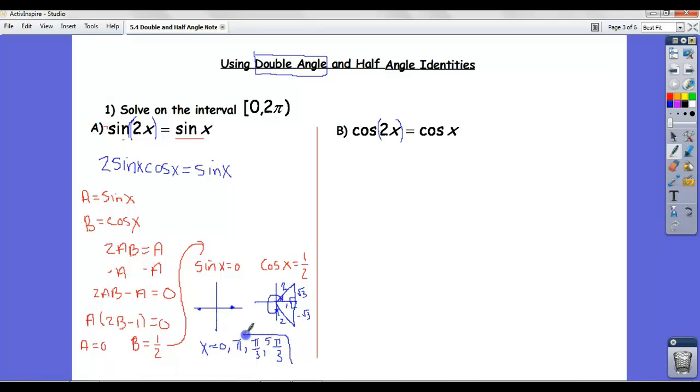So nothing is new except the very first step which was this substitution. Let's look at this one. Cosine of 2x equals cosine x. Looks like the sister to this equation over here. Again the problem is it's the cosine of 2x and this is the cosine of x. Making it difficult to call the cosine x an a because then I don't know what to call this. It's a little bit more complicated. But cosine of 2x unlike sine of 2x has three identities.